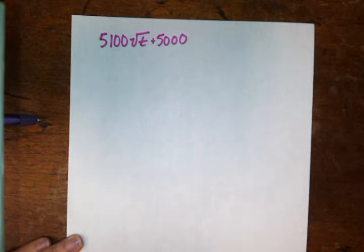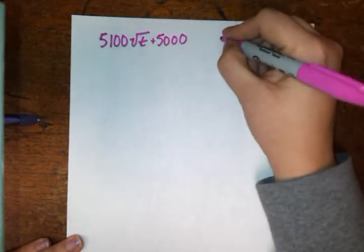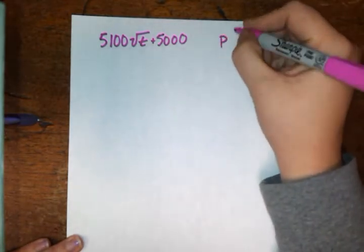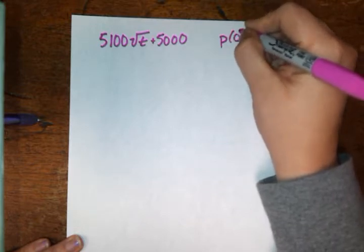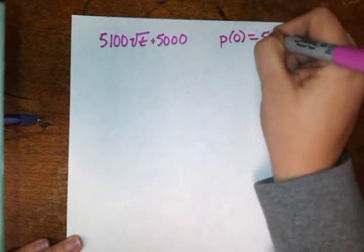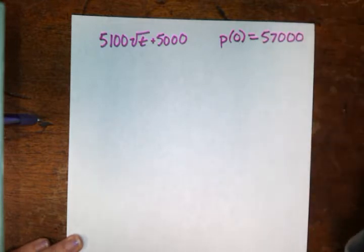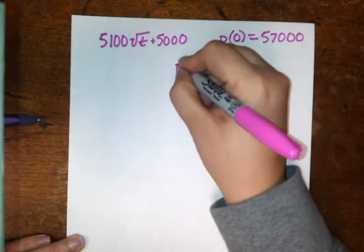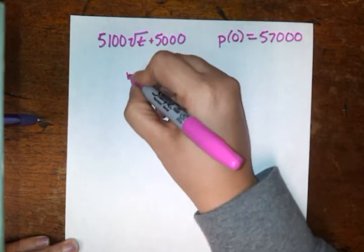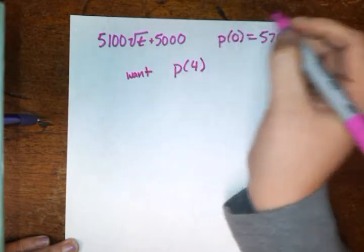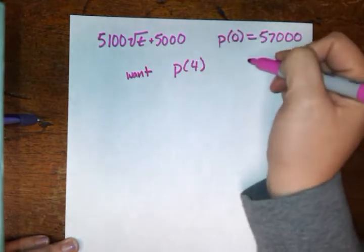They're also telling us population before construction is 57,000. So the population before construction, so that's at t equals zero, is going to be 57,000. And what they want is the population four years after the construction of the park has begun. So they want us to find p of four.